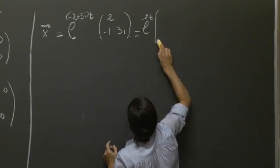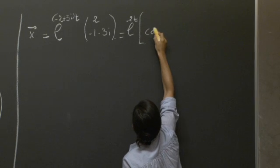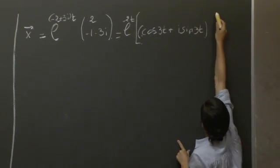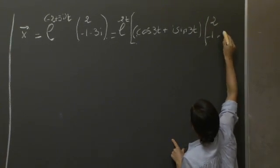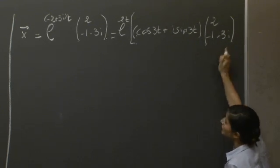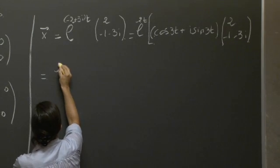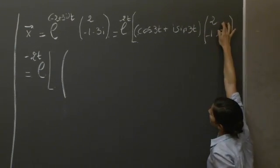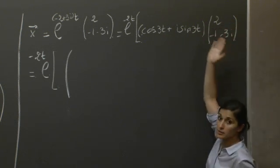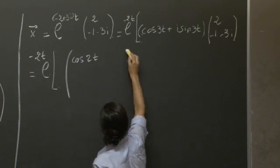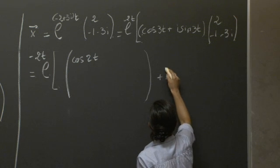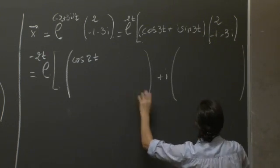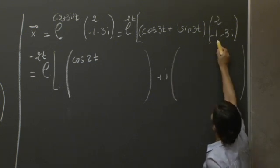Exponential minus 2t multiplying basically cosine 3t plus i sine 3t for the entry 2, minus 1 minus 3i. So we have an i here and an i here. So things can be combined into a real part. So in the first entry here, what are we going to have? We're going to have cosine 3t multiplying 2. That's going to be in the real part. And another entry here, the second entry of this vector, is going to give us cosine 3t multiplied by minus 1.